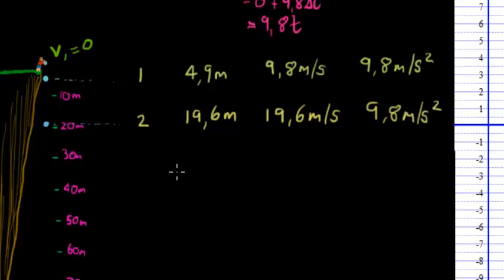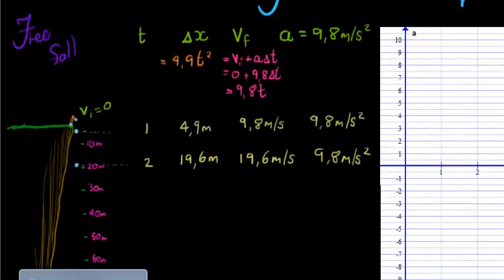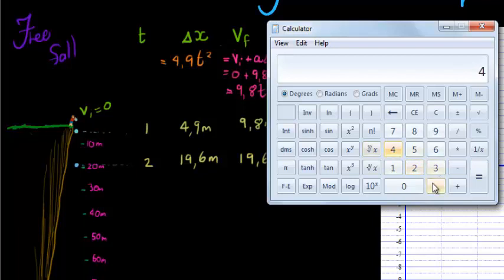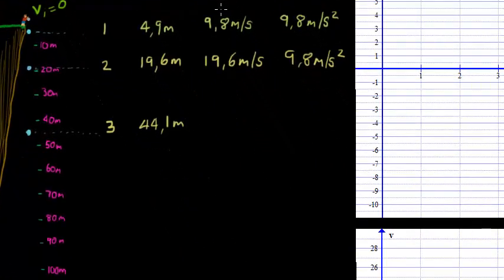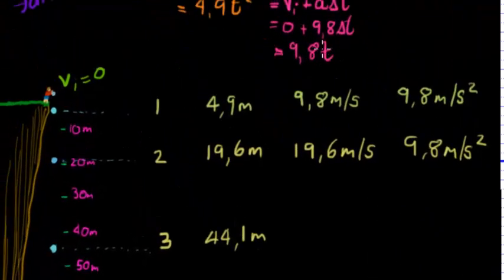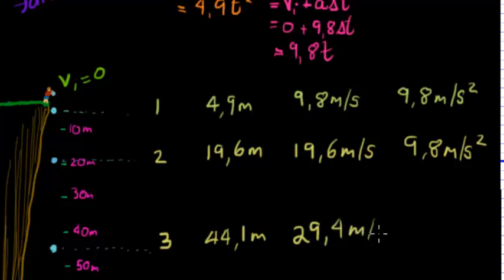Another second goes by. So how far have we fallen? 4.9 times 3 squared gives me 44.1. So I'm almost at 45 and that is at 3 seconds, traveling or having done 44.1 meters. Now 9.8 times 3 gives me 29.4 meters per second. And acceleration of course still constant, 9.8 meters per second squared.